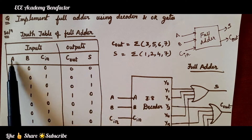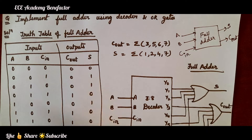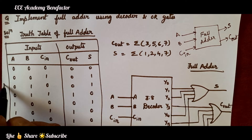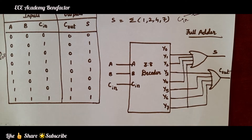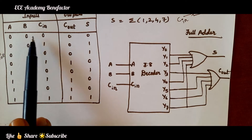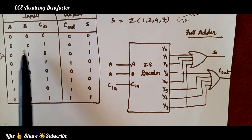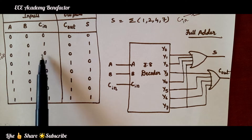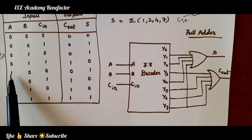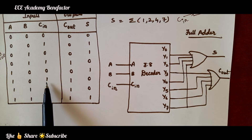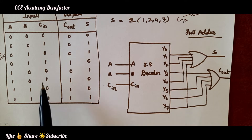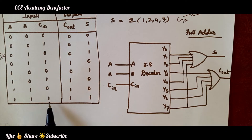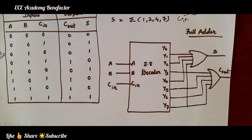To write the truth table of the full adder, we need three inputs A, B, C-in, and outputs carry C-out and sum S. When you have three inputs, we can write a total of 8 combinations — 2 to the power 3 equals 8. So we have 8 input combinations written from 000 to 111.